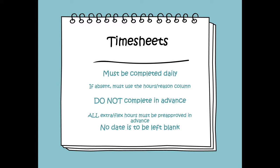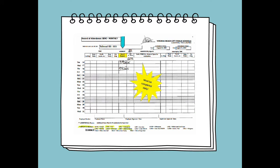Your timesheets are located in the mailroom in subject-specific binders and must be completed daily. They are not to be completed in advance and should be signed and dated at the end of the payroll period. As a reminder, no date is to be left blank. If you are absent, please report your hours and reason in the absence column highlighted in yellow.